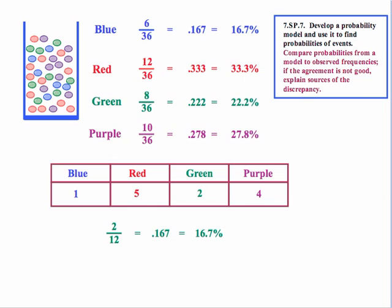Let's say they've done a trial. And again, the standard states that they need to compare probabilities from a model to observed frequencies. And if the agreement is not good, explain sources of the discrepancy. So let's look at the results here. If we focus on the green, twice out of the 12 times that we reached in to pick out a marble, it came out green. And that's only 16.7%. And that's not the expectation. It was closer to 22.2%. Kind of close, but not quite what we expected. And the justification here would be that we only did 12 trials. We really need to do more trials to see if we really do get closer and closer to what we would expect for each of these different percentages.